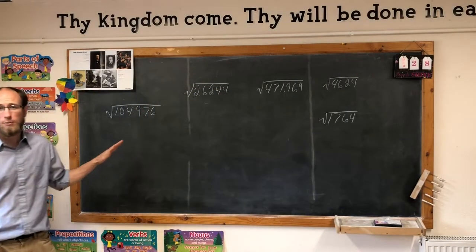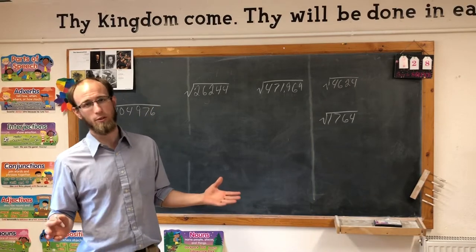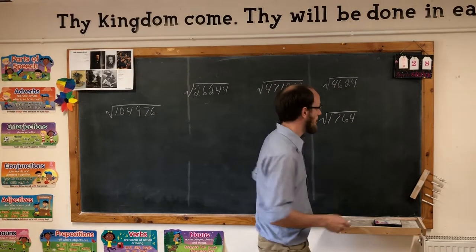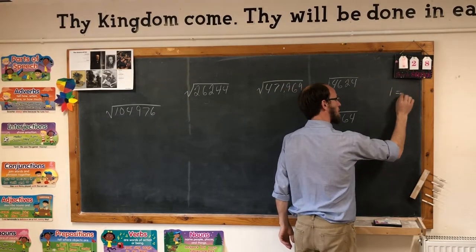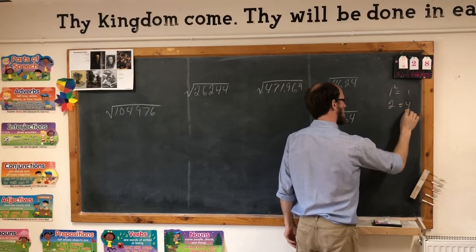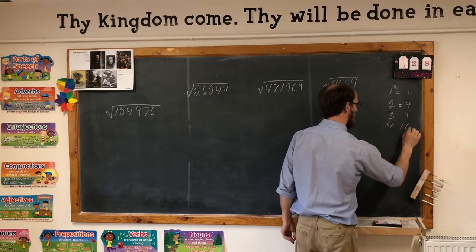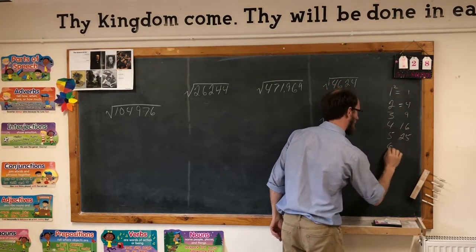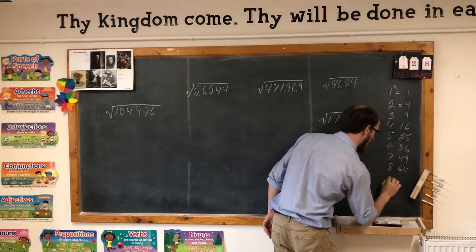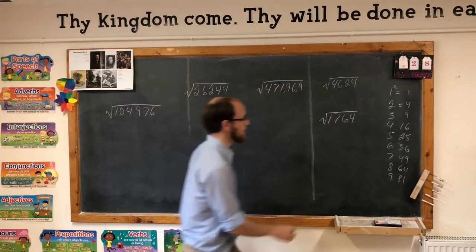The problems that CLE gives us are all perfect squares. Every one of these numbers will come out perfectly, which is very rewarding when we do it. Before we begin, I would like to make a list of what the squares equal: 1 squared is 1, 2 squared is 4, 3 squared is 9, 4 gives us 16, 5 gives us 25, 6 gives us 36, 7 gives 49, 8 gives 64, and 9 gives 81. Just so we know what we're talking about.